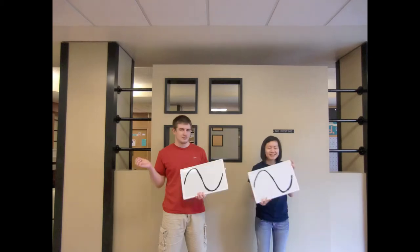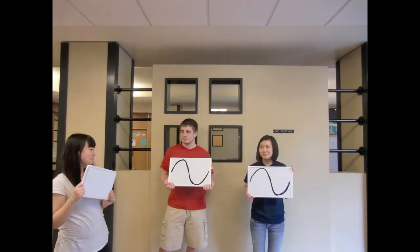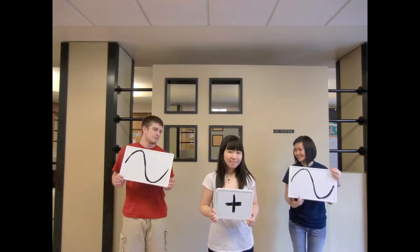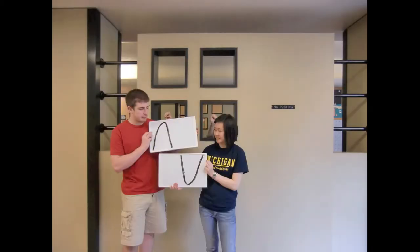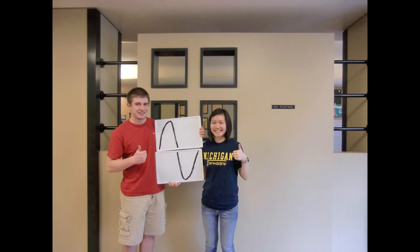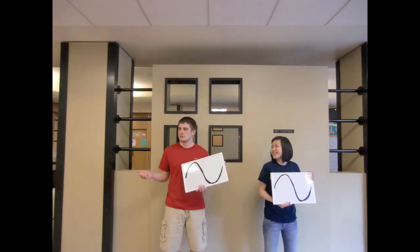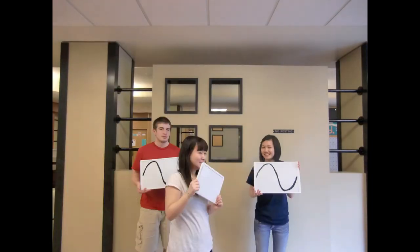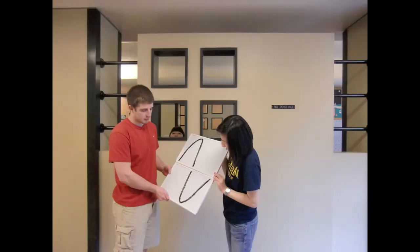During wave interference, crests will encounter other crests. This results in constructive interference, a crest twice as big as a crest without interference. Likewise, if a trough encounters another trough during interference, a trough twice as big would form.